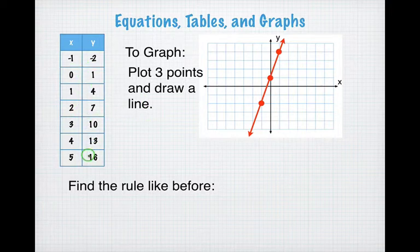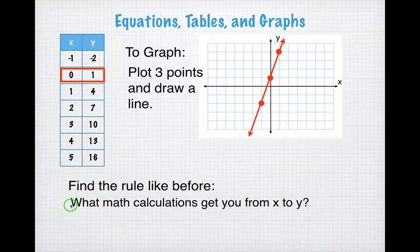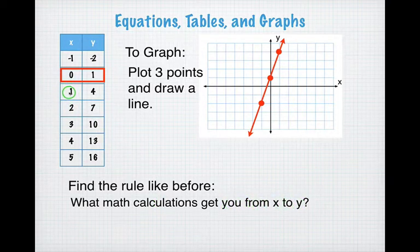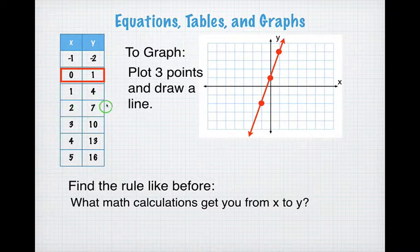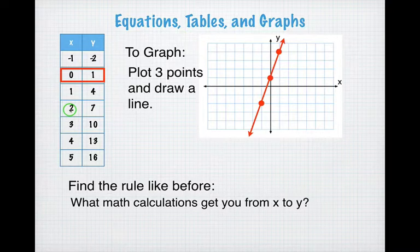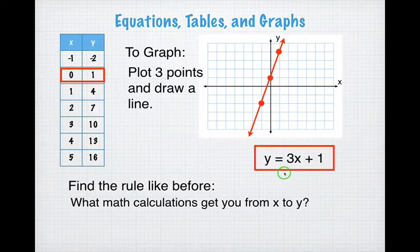Now you guys are going to find the rule like you did before. What is the equation? Well, just as a quick reminder: what math calculations get you from x to y? We try 2 times x plus 2 — that gets me from 1 to 4, but 2 times 2 is 4 plus 2 is 6, so that doesn't work. So we try 3 times x plus 1. Does that work? 3 times 2 is 6 plus 1 is 7 — that works. 3 times 3 is 9 plus 1 is 10 — there's my rule. y equals 3x plus 1.